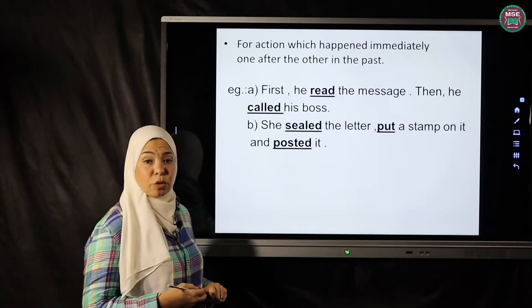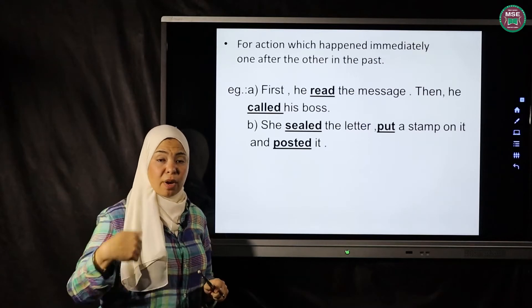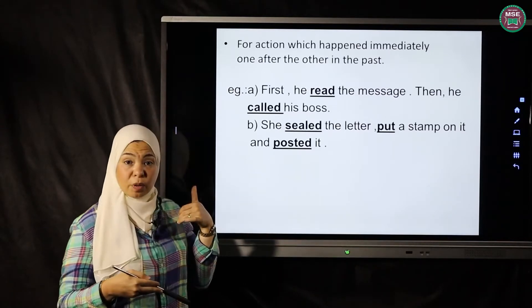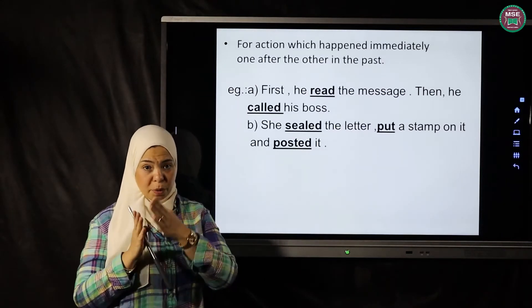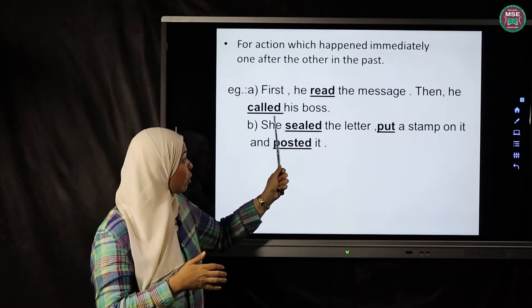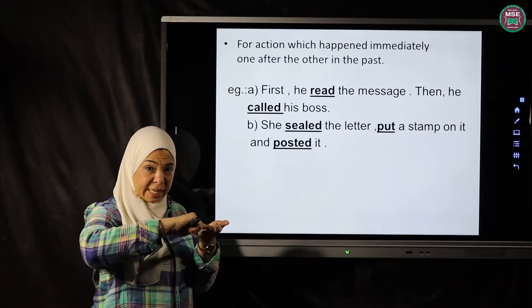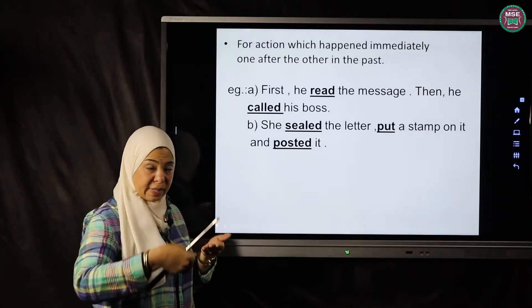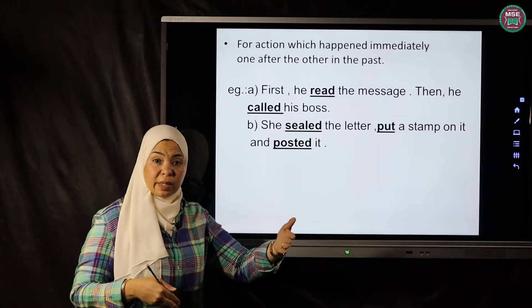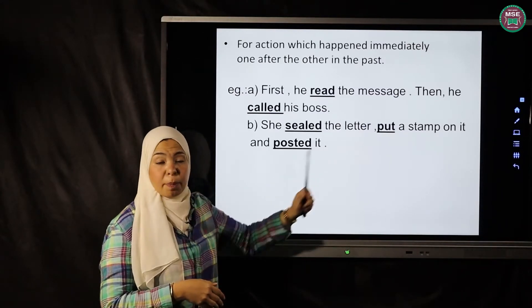The second usage is for actions which happened immediately one after the other in the past — two actions both happening consecutively. Example: 'First he read the message, then he called his boss.' The first action happened, then the second one with no space between them. Another example: 'She sealed the letter, put a stamp on it, and posted it.' The three actions happened one after the other spontaneously, without any time gap between them.